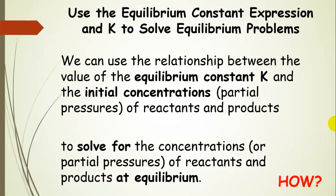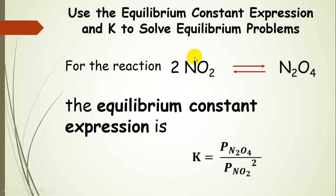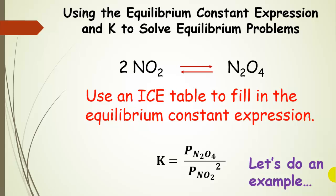After we draw an ICE table and fill everything in, we'll be able to solve for those concentrations or partial pressures of reactants at equilibrium. We have nitrogen dioxide in equilibrium with dinitrogen tetroxide. The equilibrium constant expression in terms of partial pressures is products over reactants: partial pressure of N₂O₄ to the first power over partial pressure of NO₂ to the second power. We'll fill in this equation with values involving X and then solve.